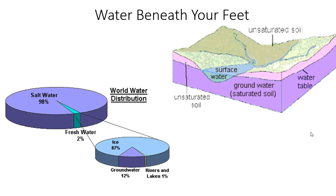A lot of people are able to draw their drinking water for their houses right from a well — that is drawing groundwater out. As you can see in this graph, only two percent of the world's water is actually fresh water, but 12 percent of that two percent is groundwater — significantly more than the water you can see in rivers and lakes.